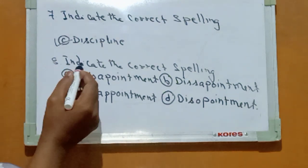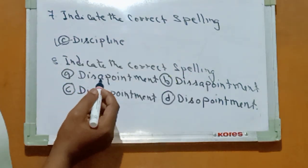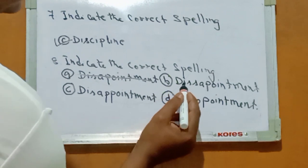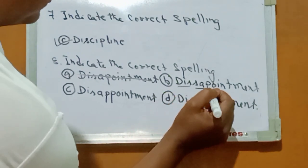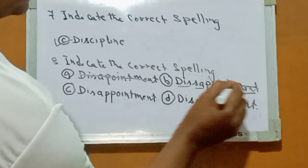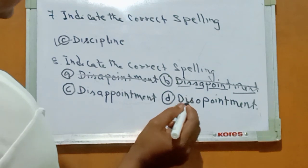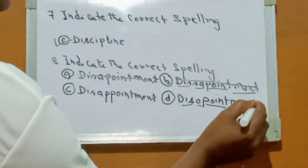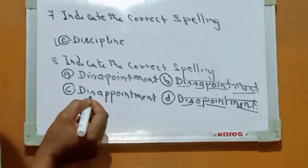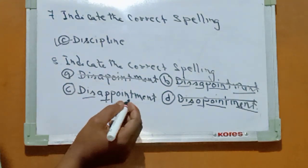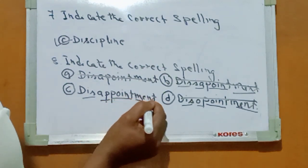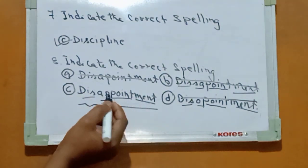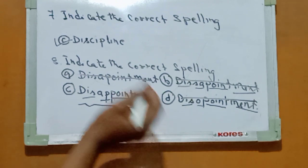Number eight: indicate the correct spelling of disappointment. The correct spelling is D-I-S-A-P-P-O-I-N-T-M-E-N-T. Number eight is the correct answer.